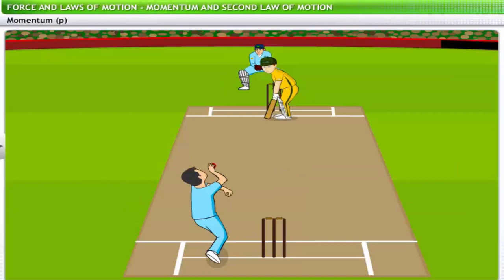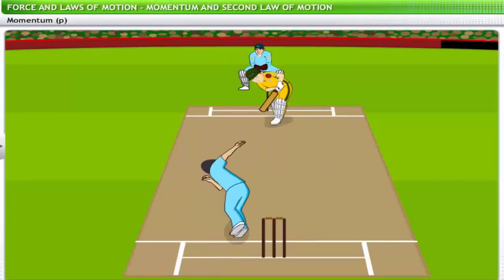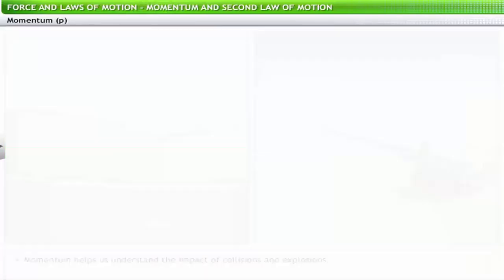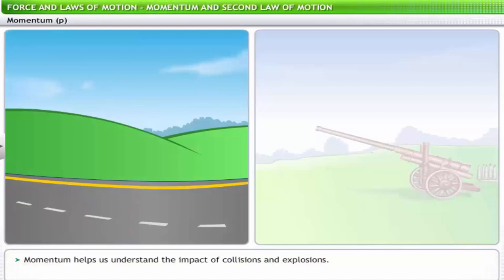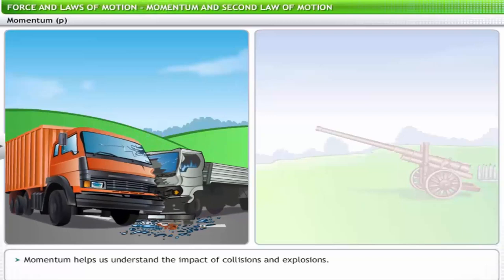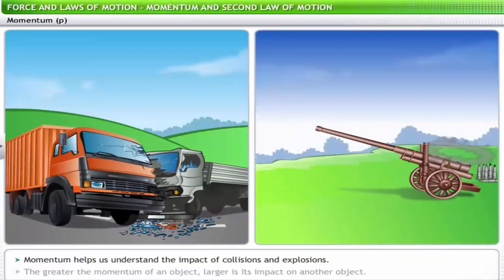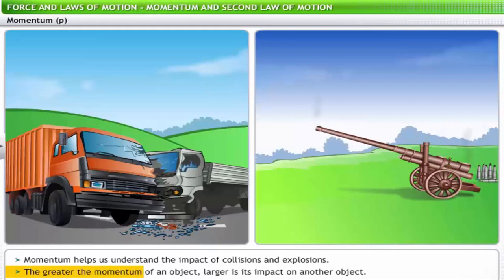Because of its momentum, a fast-paced cricket ball can hit and hurt the batsman or the wicket keeper if the batsman is not able to play the ball properly. That's why batsmen wear protective helmets and body pads to prevent possible injury. Momentum helps us understand the impact of collisions and explosions — for example, a collision between two trucks or a cannon firing. The greater the momentum of an object, the larger the impact on the other object.